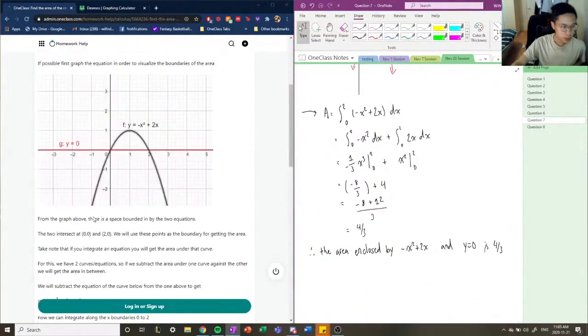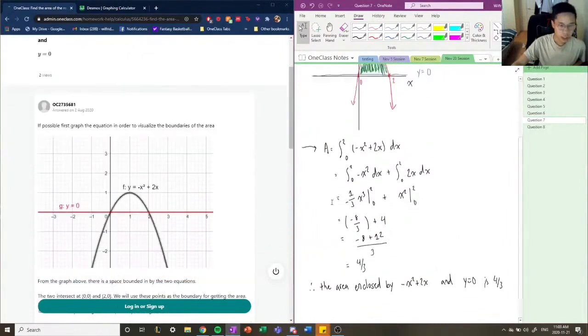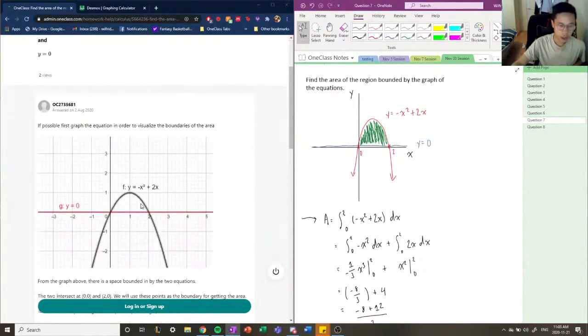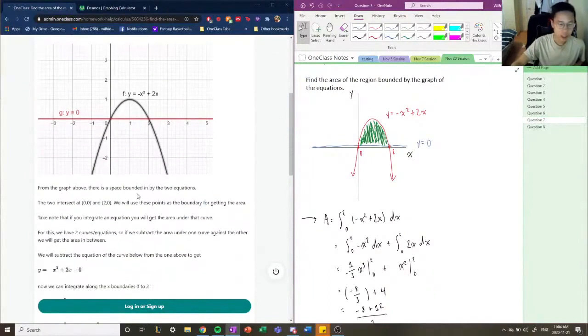All right, so whenever you're calculating any kind of area enclosed by the curve, this is a very simple example, but sometimes you'll have a line and a parabola. Sometimes you'll have a cubic function. Sometimes you'll have two circles. Always try to find the point of intersection.